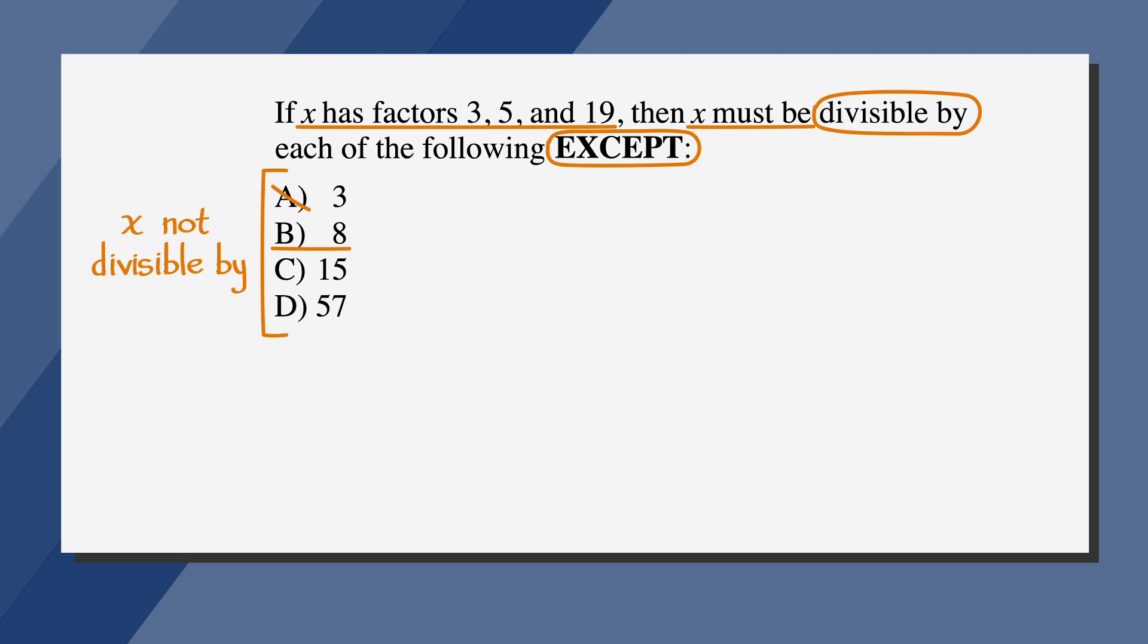Let's approach answer choice C, 15, in a slightly different way. As we already saw, 3 times 5 times 19 equals 285, which means 15 times 19 equals 285. So 285 divided by 15 equals 19, which means 285 is evenly divisible by 15. So C is wrong.